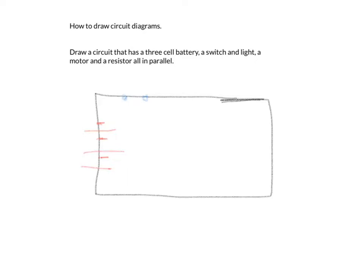I need to add a light, a motor, and a resistor all in parallel. Since I only have one path, I'm going to add another path and another path — make sure they're connected. There's my light, there's my motor, and a resistor.